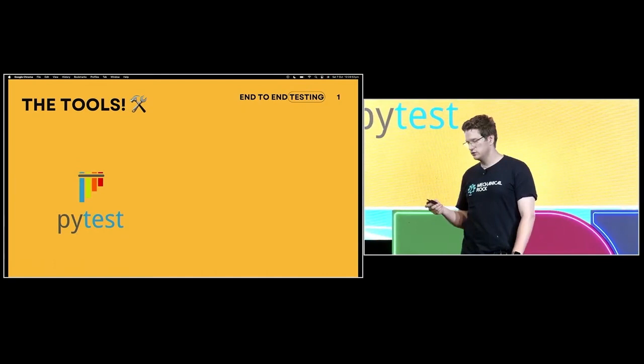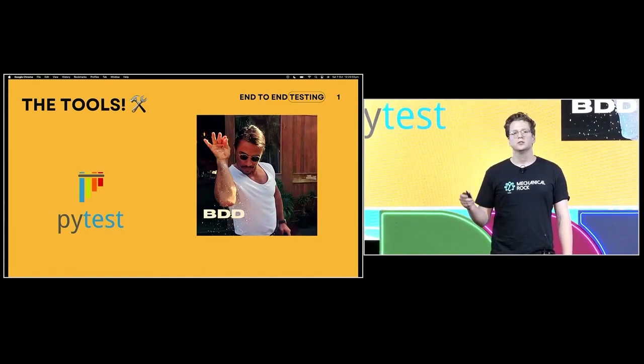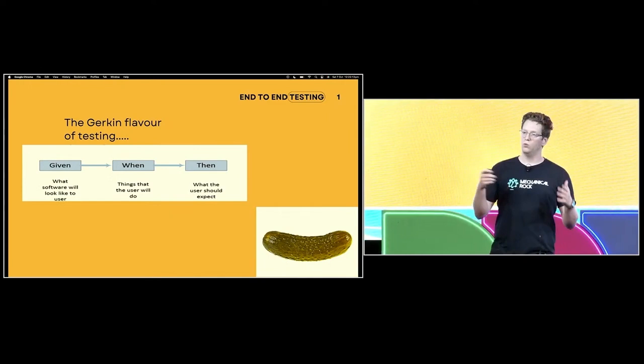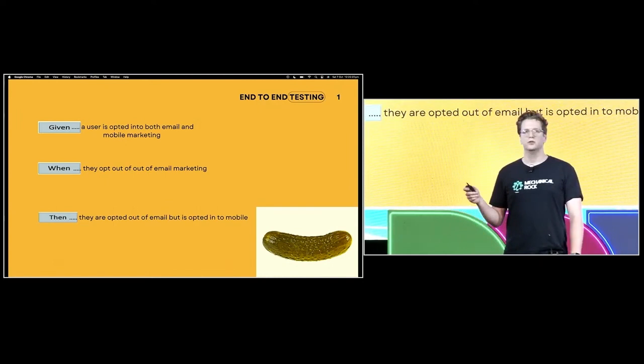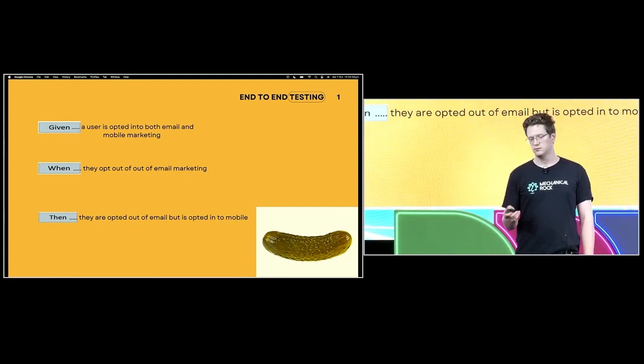I'm going to walk through a technical example using PyTest. PyTest is great for this sort of thing — it's very versatile and it's in Python, which most data engineers know quite well along with SQL. I'm also going to have a bit of BDD sprinkled in there. BDD stands for behavioral-driven development, and that's going to take the form of a Gherkin test. A Gherkin test has the structure of given, when, and then: given a certain context, when an action is performed, then I expect this to happen. The example I'm going to walk through is: given a user is opted into email and mobile marketing, when they are opted out of email marketing, then they are opted out of email but still into mobile.